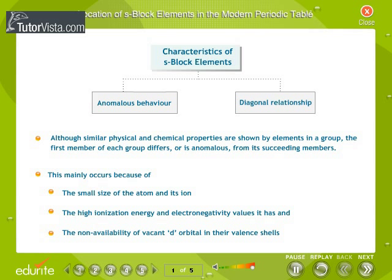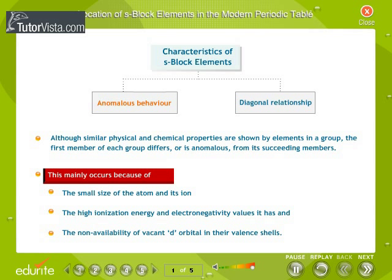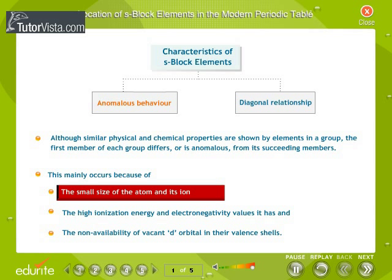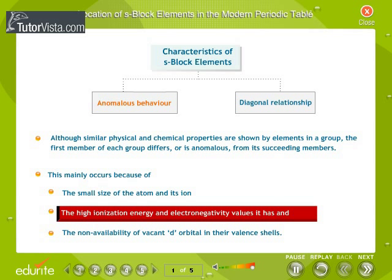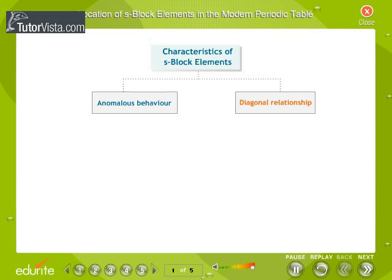S-Block elements show two important aspects. The first is the anomalous behavior of the first element in each group. Although similar physical and chemical properties are shown by elements in a group, the first member differs from its succeeding members, mainly due to the small size of the atom and its ion, high ionization energy and electronegativity values, and the non-availability of vacant d-orbitals in their valence shells.